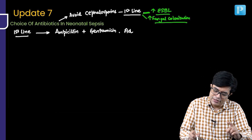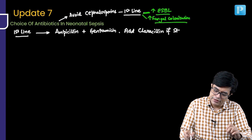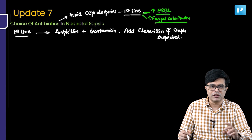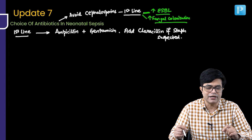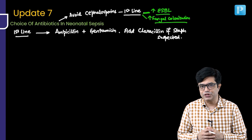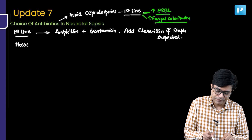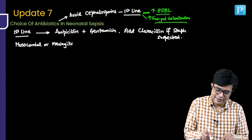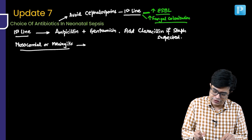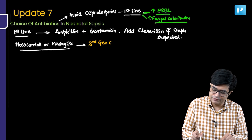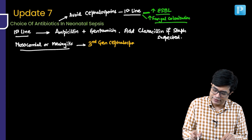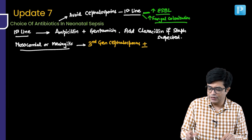Ampicillin with gentamicin, and you will add cloxacillin if staph is suspected. For example, if there is a boil, furuncle, or omphalitis and culture was already positive for staph and now sepsis is developing, add cloxacillin. In cases of nosocomial infection or meningitis, cephalosporins will be needed — use third-generation cephalosporins like cefotaxime, plus or minus aminoglycosides.